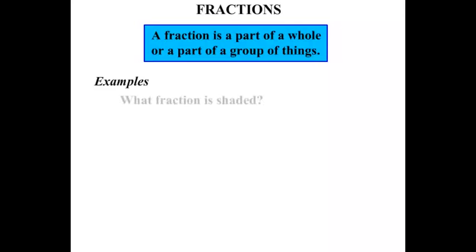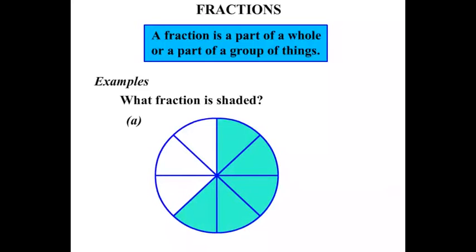Let's look at some examples. What fraction is shaded? In part A we have a circle split into 1, 2, 3, 4, 5, 6, 7, 8 equal pieces. So it's going to be out of 8. Over 8. Now how many are shaded? 1, 2, 3, 4, 5. So the top number, the numerator is 5. 5 over 8. We say that as 5 eighths.